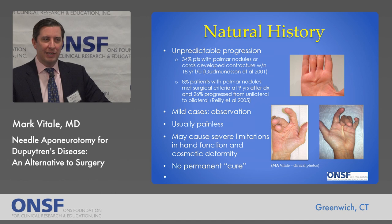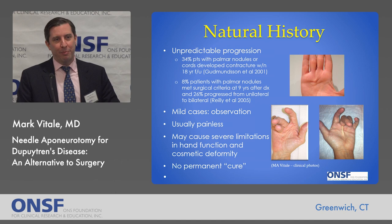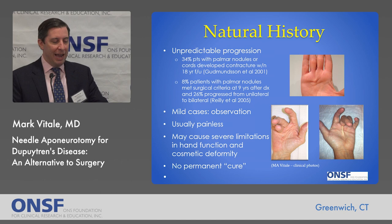The interesting thing about Dupuytren's is it's very unpredictable; the natural history is not clear. If someone comes into my office with a small nodule, I can't tell them whether it's definitely going to be a problem. One Scandinavian study done over a long period found that 34% of patients who initially presented without a contracture but with a nodule or cord developed a contracture within 18 years. Another study found that 8% of patients with palmar nodules met surgical criteria nine years after diagnosis, and 26% progressed from unilateral to bilateral disease.